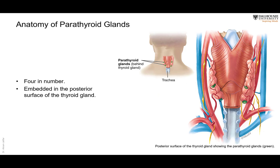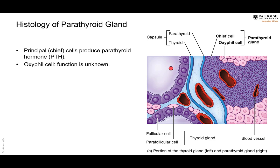The parathyroid glands, as the name indicates, are closely related to the thyroid. They are very small, like the size of a pea, and we have two pairs — superior and inferior — located posterior to the thyroid glands. They are outside the fibrous capsule of the thyroid glands but closely related to it. That is why in thyroid surgery, if the thyroid is totally removed, care must be taken not to remove the parathyroid glands, or at least to keep a couple of them.